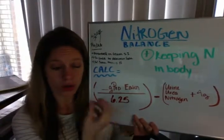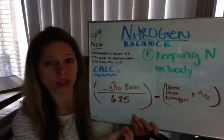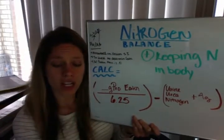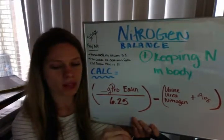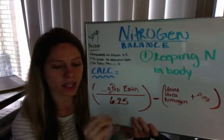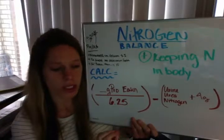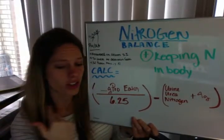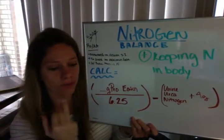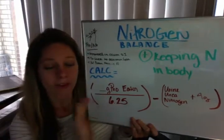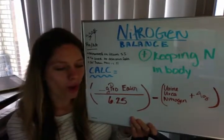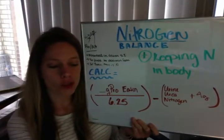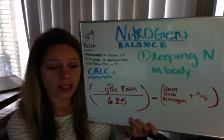Negative, or excretion — losing nitrogen — is going to be the opposite. We're thinking about breaking down lean body mass. We might see inadequate protein intakes, surgery, infection, sepsis, or fractures. All of that kind of thing might lead to a negative nitrogen balance.